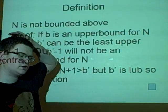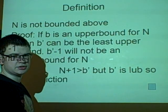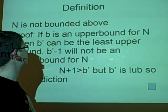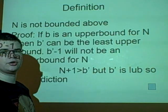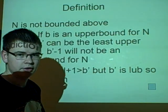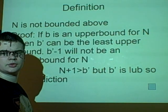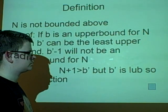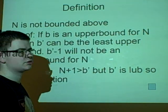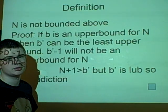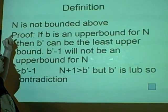Now the Axiom of Archimedes basically says that the natural numbers n are not bounded above. And that's fairly... I can't remember the word now. What's the word? Common sense. It's proof by common sense really. So the proof is,